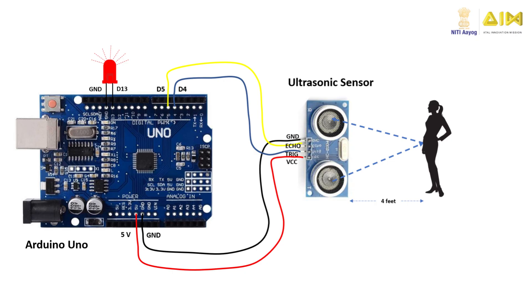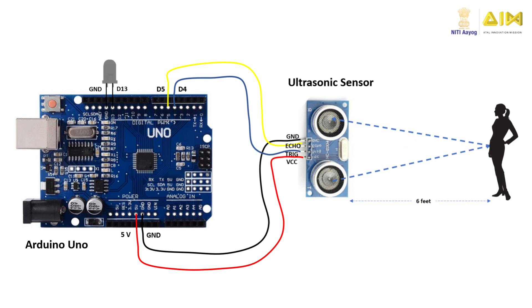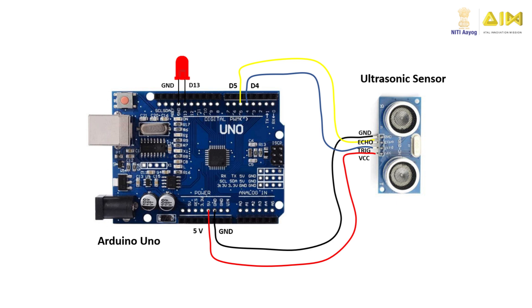Power on the Arduino board and stand within 5 feet distance from the ultrasonic sensor. You can observe the LED light up. Next, move beyond 5 feet distance from the ultrasonic sensor and observe the LED turn off. You can change the threshold distance at which the circuit turns the LED on or off by changing the Arduino sketch suitably.